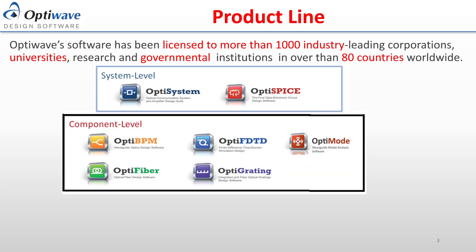A wide range of software tools are also offered with focus on individual components. OptiBPM, OptiGrading, and OptiFiber allow for the simulation and design of optical fibers, waveguides, and gratings. These packages are compatible with OptiSystem, where user-created components can be loaded into an OptiSystem file for testing at the system level. OptiFDTD allows for the design of more complex components using the finite difference time domain algorithm, and OptiMode is a dedicated suite of applications for mode solving and waveguides.